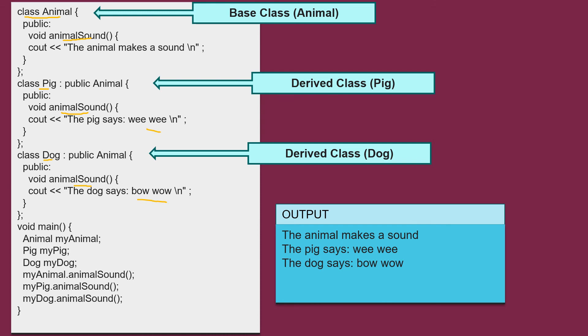In the main function you see my animal object is of class animal, my pig object is of class pig, my dog is the object of dog class. Here we are calling your member function. This is my animal dot animal sound. This will call your base class.